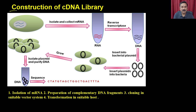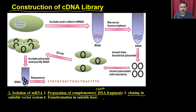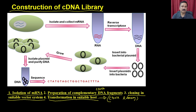The construction of the cDNA library is a multi-step process. Step 1 is isolation of messenger RNA. Step 2 is preparation of complementary DNA (cDNA). Step 3 is cloning that cDNA into a suitable vector system. Step 4 is transformation into a suitable host to prepare the cDNA library. The cDNA library is a collection of clones that shows the expression status of that particular cell.